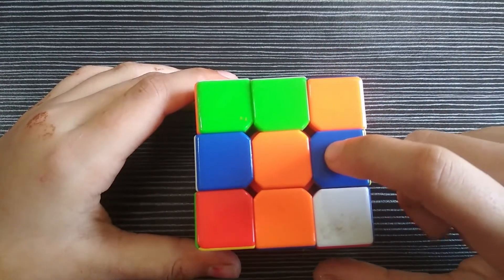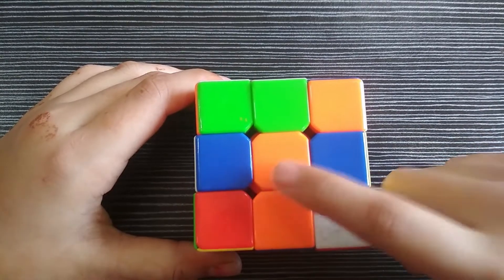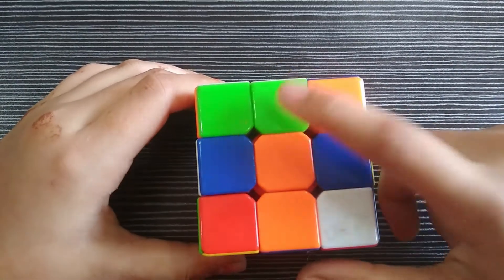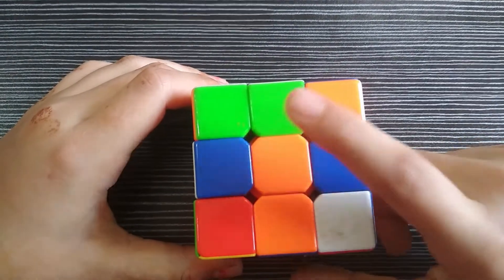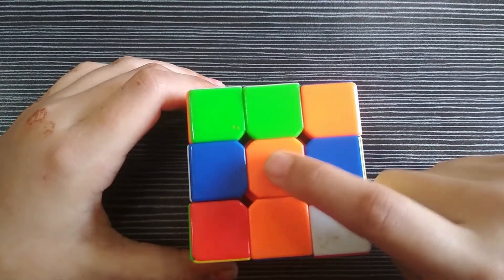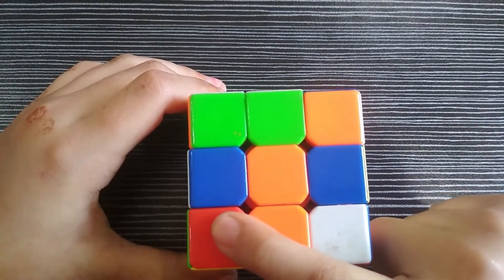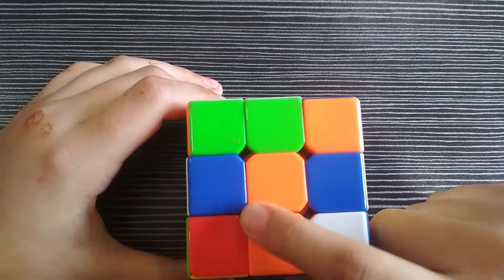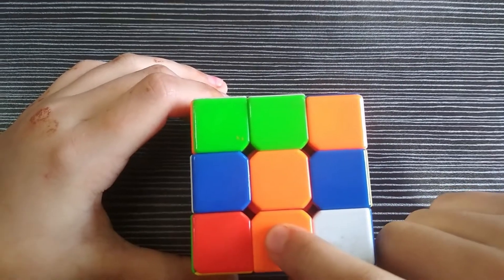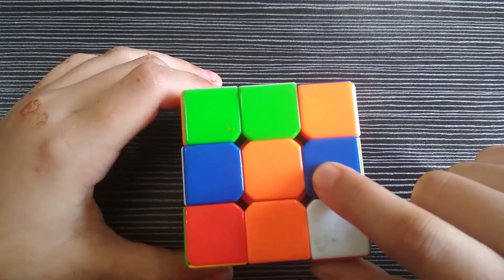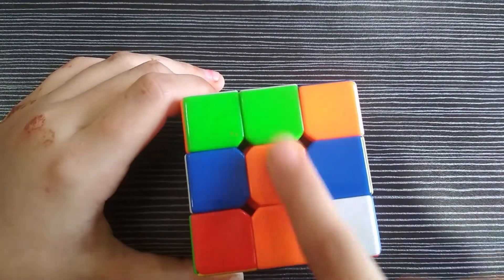The squares joining the center are known as their edges. So this green block or square is the edge. This blue one is also edge. Is this red one? No, because it is not joining. This orange one is the edge, and this blue one is the edge. So these edges make a cross.